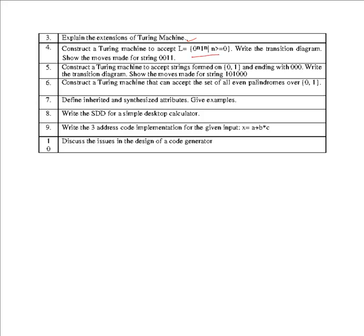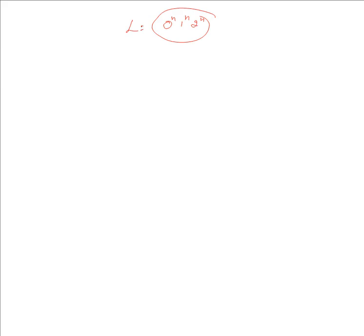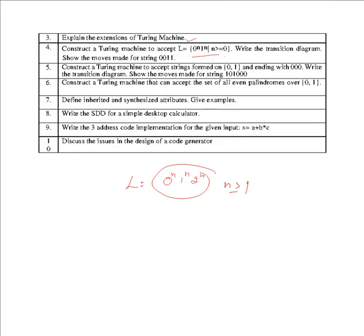0^n 1^n - you may get this problem with two input parameters or with three like 0^n 1^n 2^n. These are repeatedly asked questions. You have to design the Turing machine for this where n is greater than or equal to 1. Any one you may get.